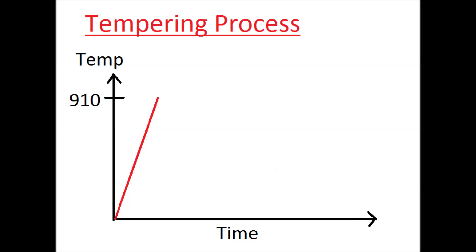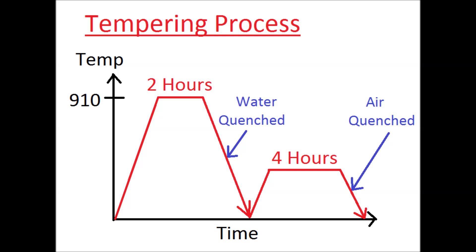Tempering is a two-step process by which a material is held at an elevated temperature for a duration of time, water quenched, and then heated to a lower temperature for a specific time period, and then finally air quenched.